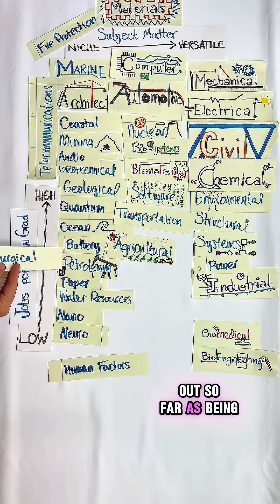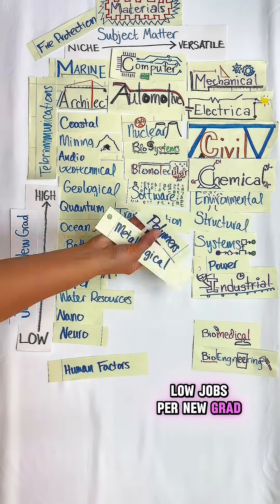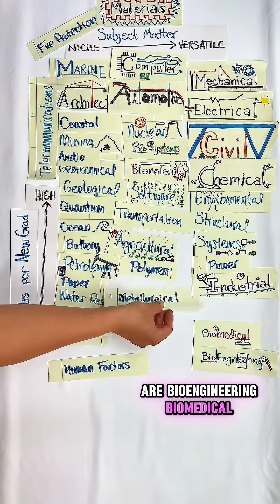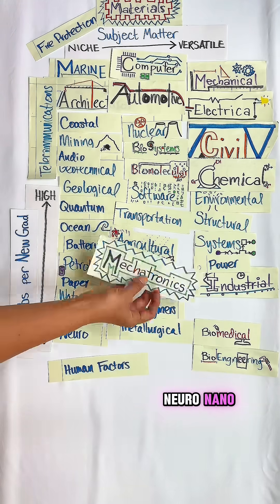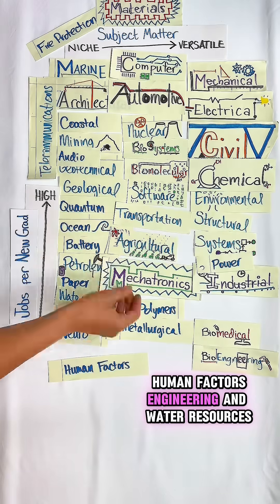And really, the only fields I've called out so far as being low jobs per new grad are bioengineering, biomedical, neuro, nano, human factors engineering, and water resources.